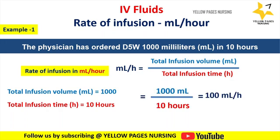Applying the formula, we get 1000 ml divided by 10 hours, which gives 100 ml per hour. Hence the rate of infusion will be 100 ml per hour.